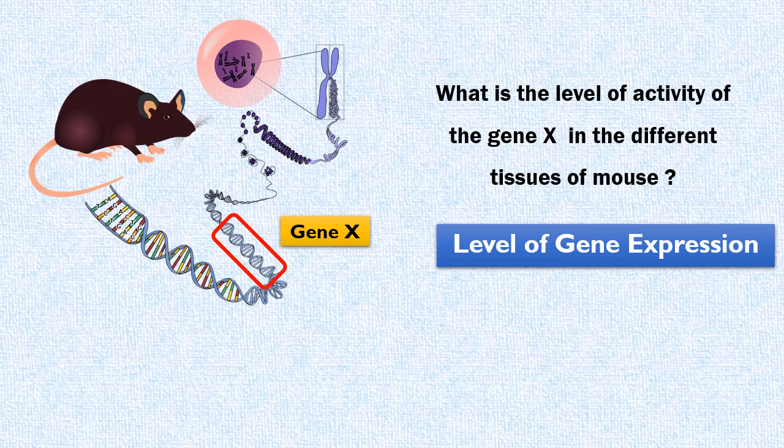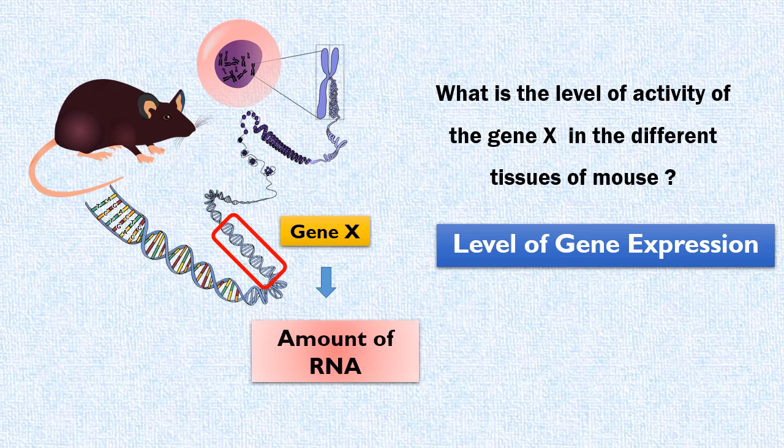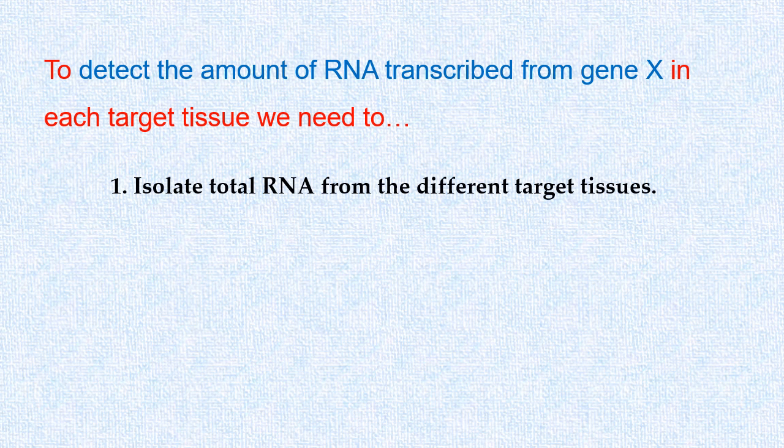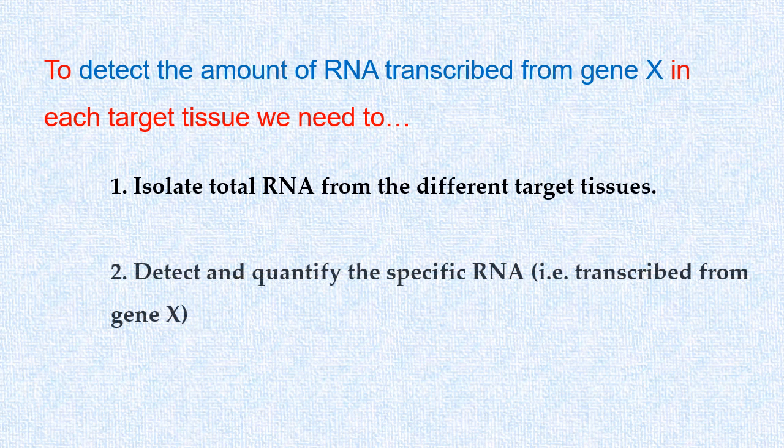Level of gene expression can be easily determined if we find out the amount of RNA transcribed from gene X in each tissue. For this, we need to do two things. First, isolate RNA from the different tissues of the mouse. And second, detect and quantify the specific RNA, that is RNA transcribed from gene X.